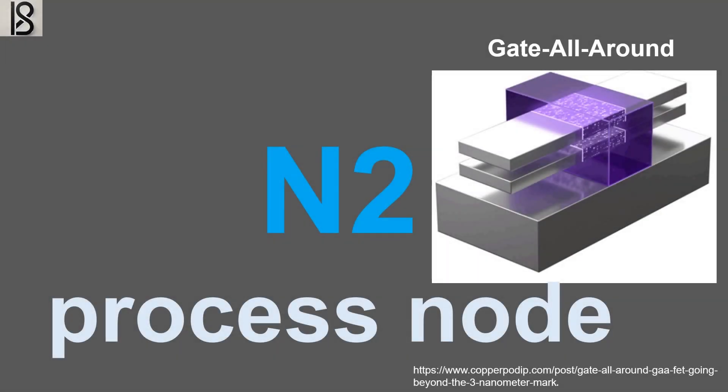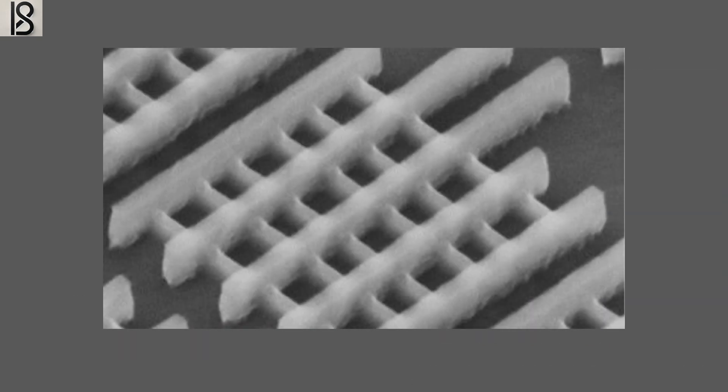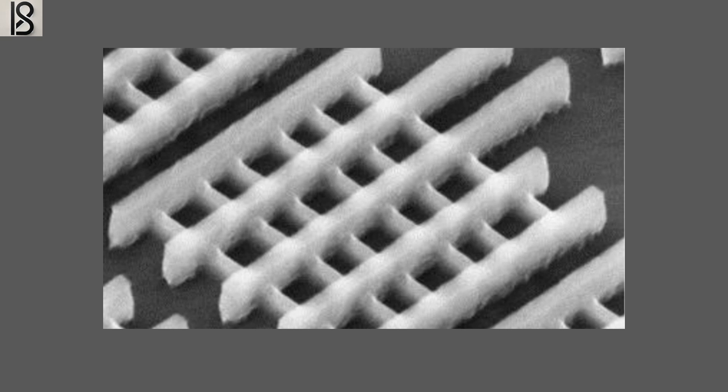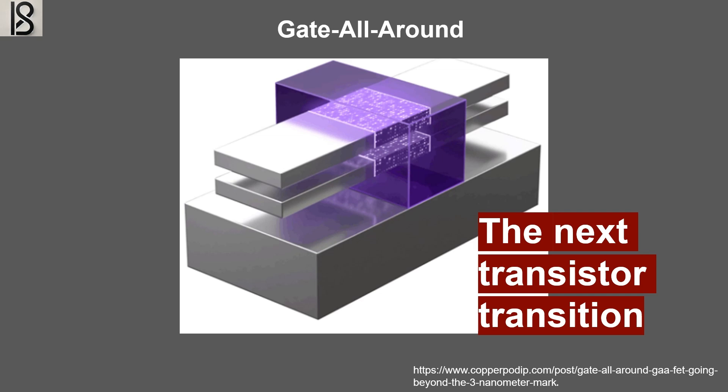Hello everyone, welcome to today's video on gate all around. TSMC's upcoming N2 process node is one of its most ambitious, with unique advancements and something special about its transistor designs. In 2011, the semiconductor industry switched from flat transistors to 3D ones with the now-famous FinFET. Now over 10 years later, TSMC is joining Samsung and Intel in making another big change. In today's video, we are going to talk about the gate all around vertically stacked nanosheet nanowire metal oxide semiconductor field effect transistor.